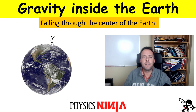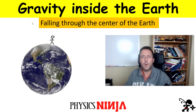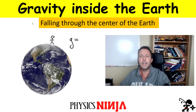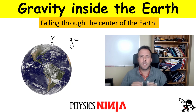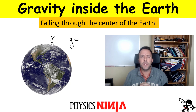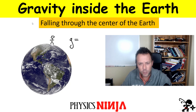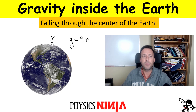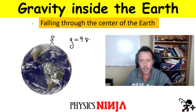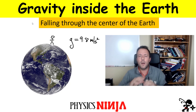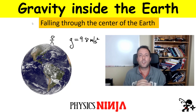Hi everybody, Physics Ninja here. Today I want to look at little g - the acceleration due to gravity. If you've taken any physics class, you should know that if you're on the surface of the Earth, the value is approximately 9.8 meters per second squared. That's if you're on the surface of the Earth.